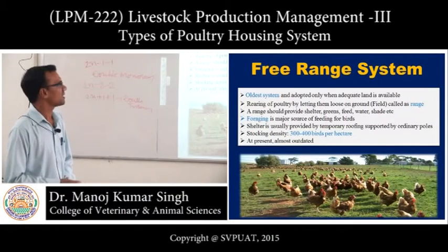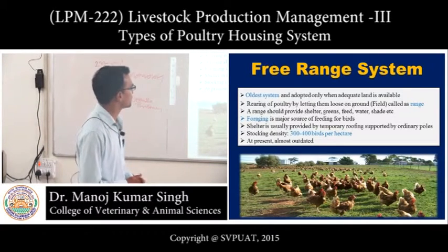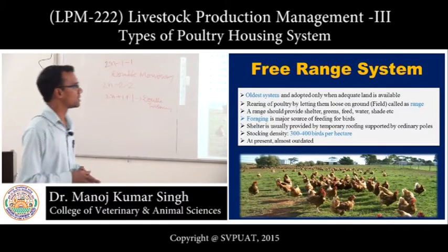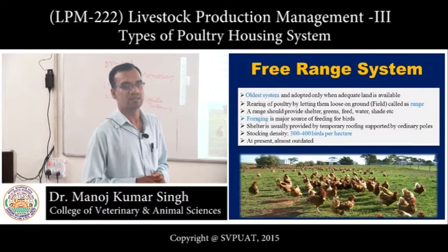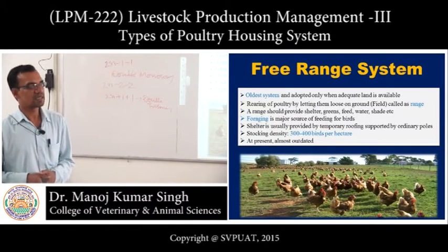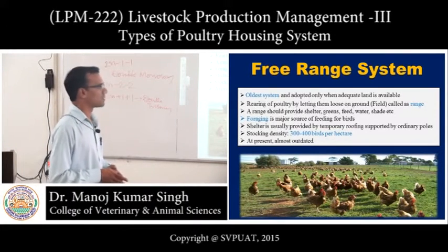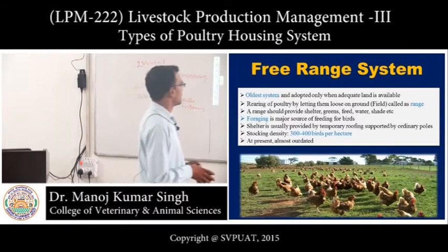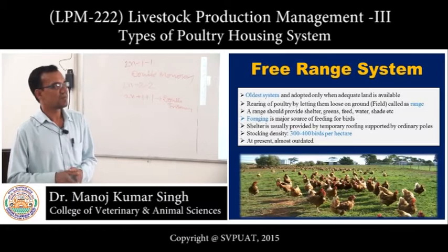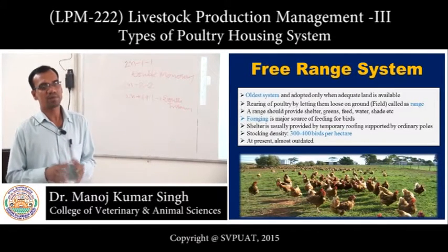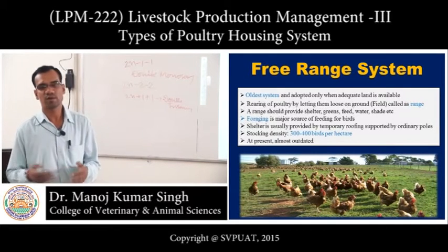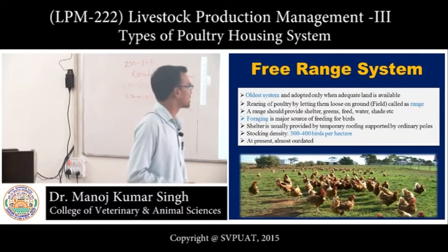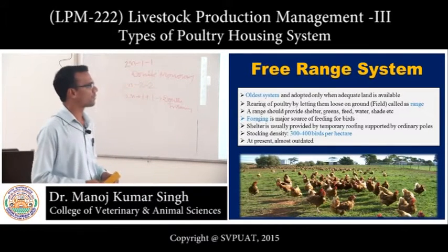The first is the free range system — it is the oldest system. Here, adequate land is available and poultry is reared by letting birds loose on the ground, called a range or field. The range provides shelter, greens, feed, water, and shade. Foraging is the major activity of birds for feeding. Temporary roofing is provided for protection from rain or sunlight, and stocking density is about 300 to 400 birds per hectare.